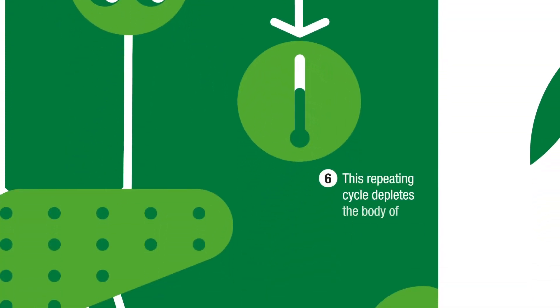This repeating cycle depletes the body of oxygen, causing malarial fever and chills.